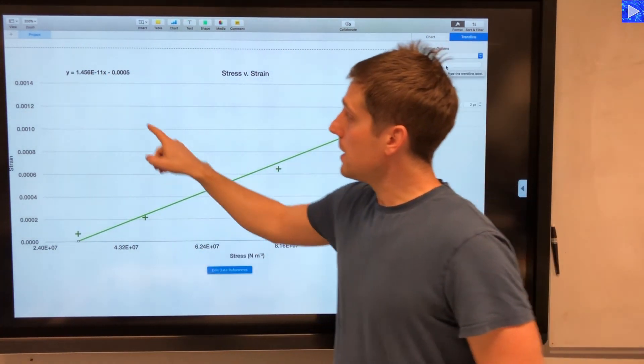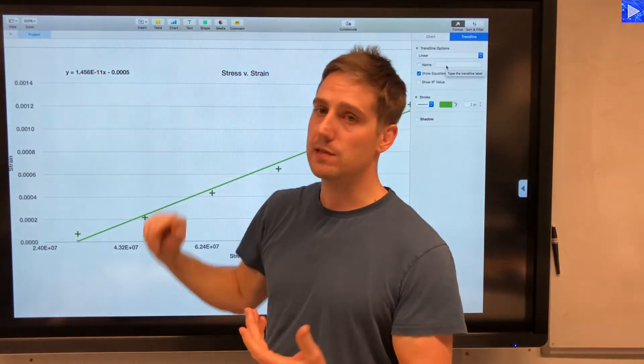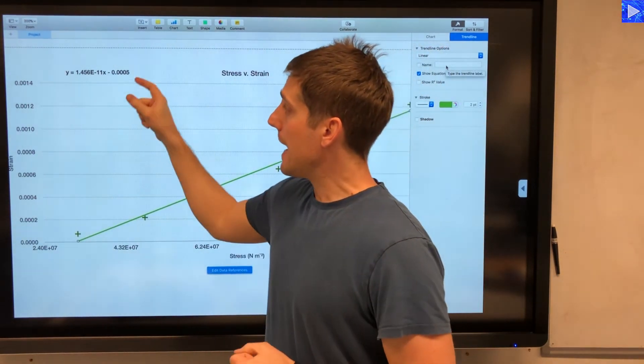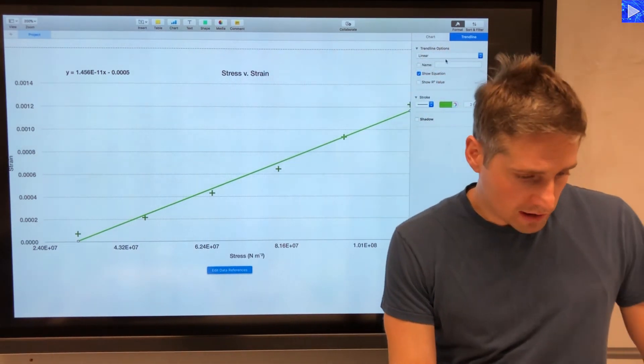That gives me 1.456 times 10 to the minus 11. That e to the minus 11 means times 10 to the power of minus 11. And that value is what I use to calculate Young's modulus.